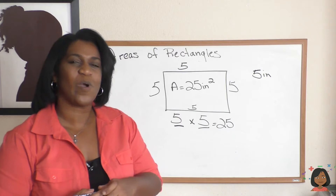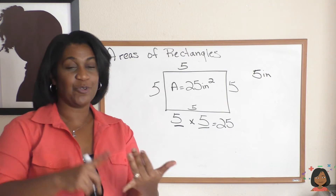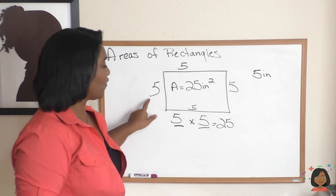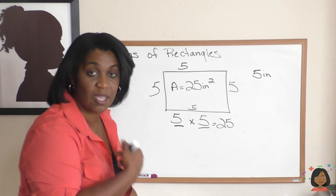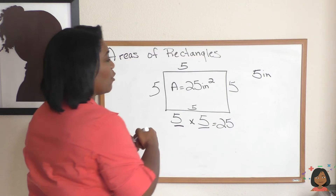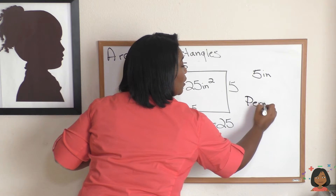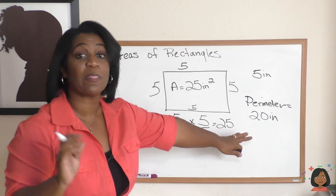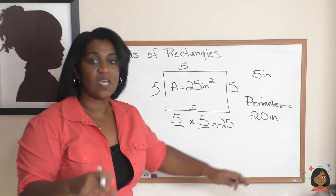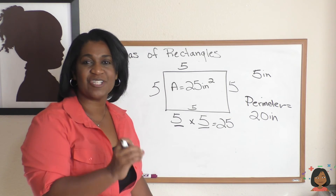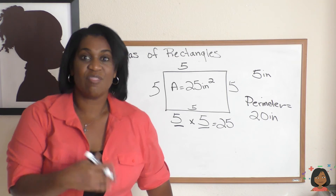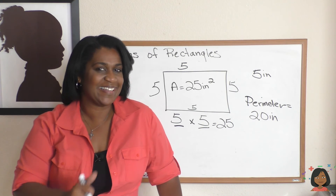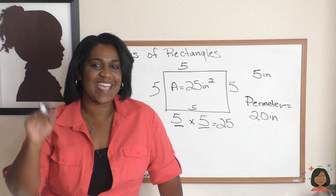What if I took it one step further and asked for the perimeter now that you know the side length? Perimeter is just adding up all the sides: five plus five plus five plus five, which is the same as five times four. The perimeter equals twenty inches. Notice the difference in labeling: with perimeter it's just inches, but with area it's inches squared. That's your lesson on area — I told you it was easy! See you next time, bye!